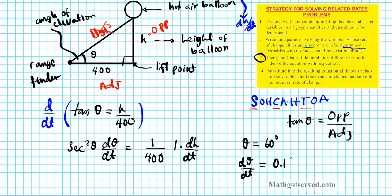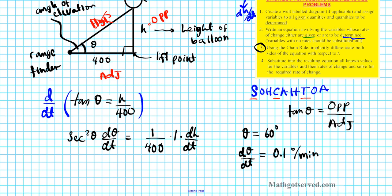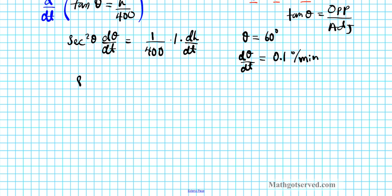So after making a substitution, we're going to have secant 60 degrees squared. The dθ/dt is 0.1 equals 1 over 400 dh/dt. All right? The dh/dt, that's what we're looking for. Okay? So let's go ahead and solve that.